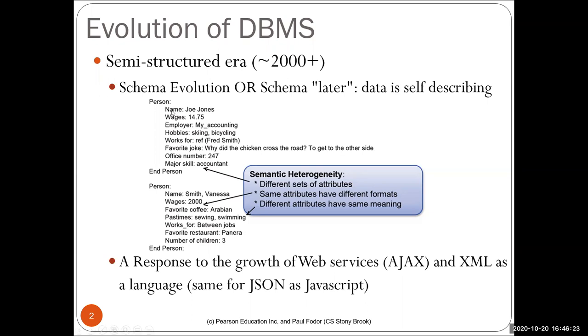Multiple ideas emerged: the schema doesn't have to be decided on at the beginning of the project and data can be self-describing. Basically each attribute can have the name of that attribute. So a person has a name that is Joe Jones, wages $14.75 an hour, and so on. And not all data fields are available for other people. One person may have hobbies stated, another person may have favorite coffee stated.